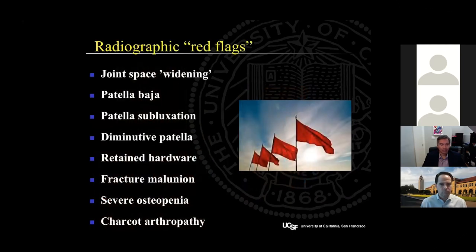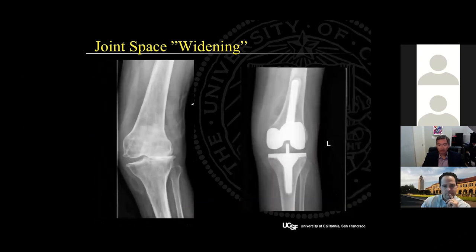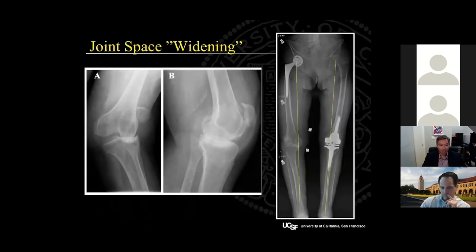Moving on to some red flags you may see on the x-rays of your clinic patients. These knee x-rays don't indicate isolated unicompartmental lateral knee arthritis, but rather degrees of MCL incompetence. The question is really what level of constraint will be necessary at the time of the total knee replacement. For this one, we could probably get by with a semi-constrained implant — note the cemented stems to bolster the fixation — whereas this one required a primary hinge total knee replacement.